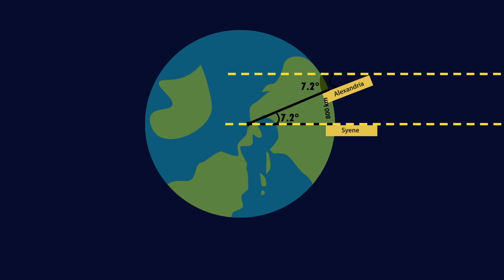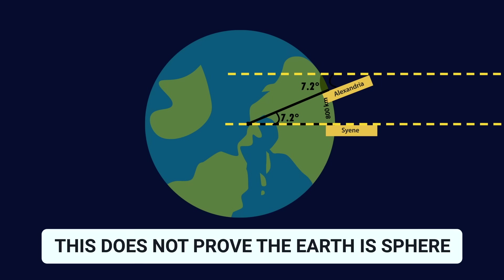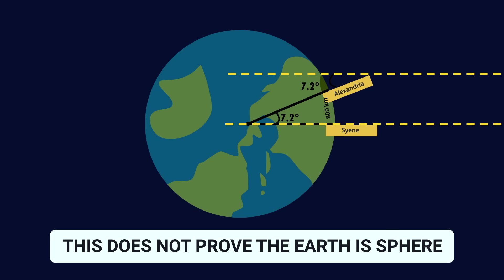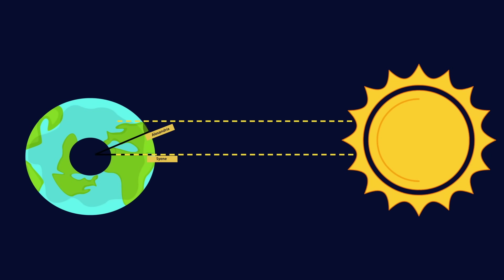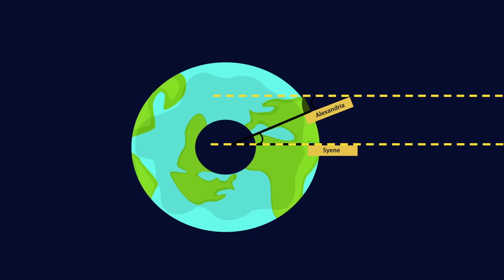But second, and more importantly, this does not prove the Earth is a sphere. At least on its own, it does not prove the Earth's shape. Not even slightly. If the Earth were a donut, we'd still find a difference in shadow angles between two different locations at the same time. That's just going to happen if the surface is curved.